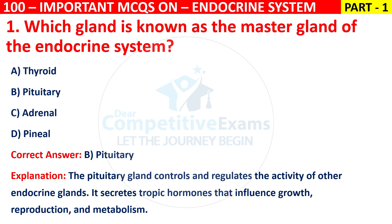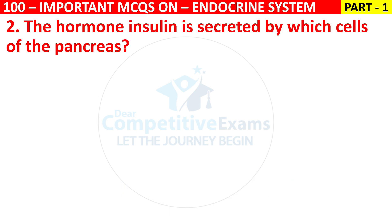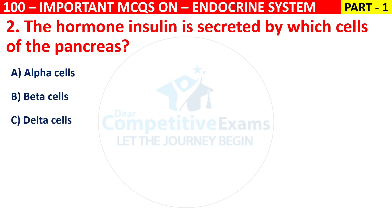Q2. The hormone insulin is secreted by which cells of the pancreas? Your options are alpha cells, beta cells, delta cells, or SNR cells.